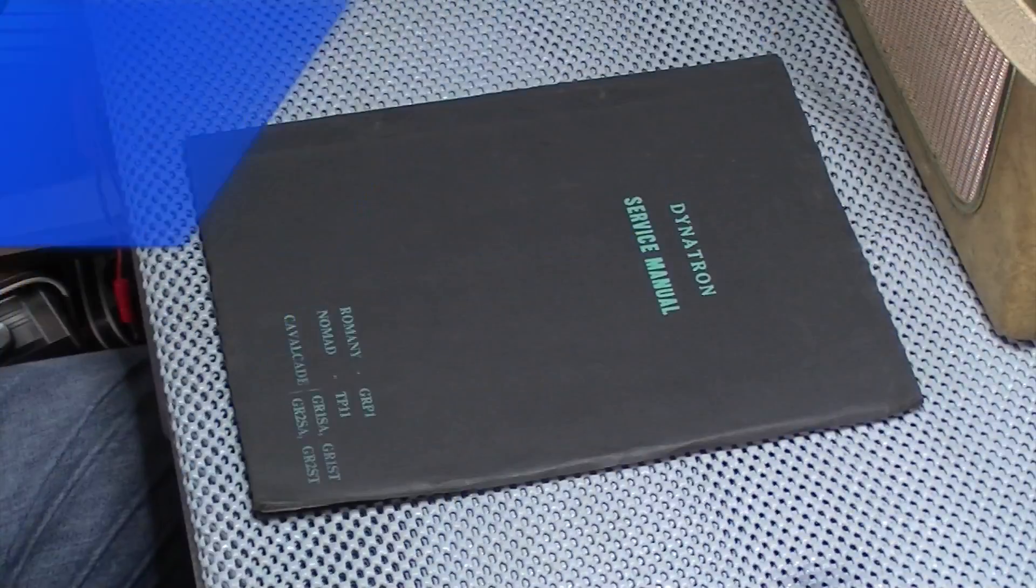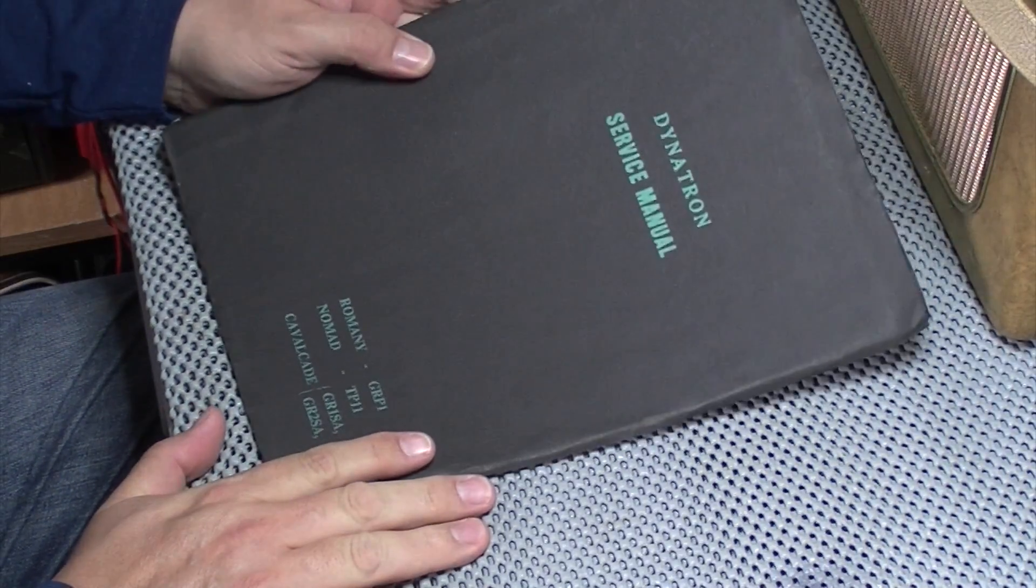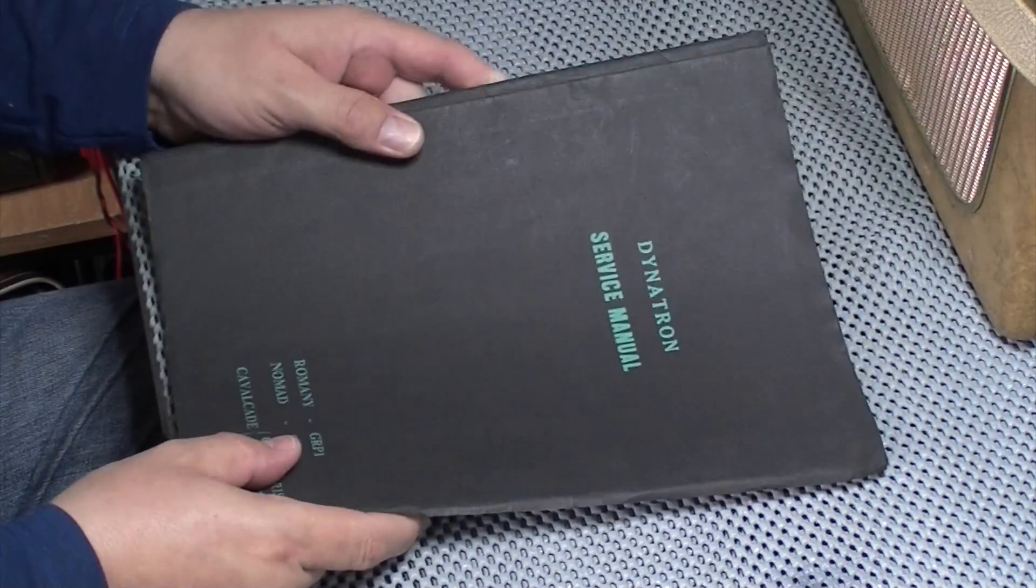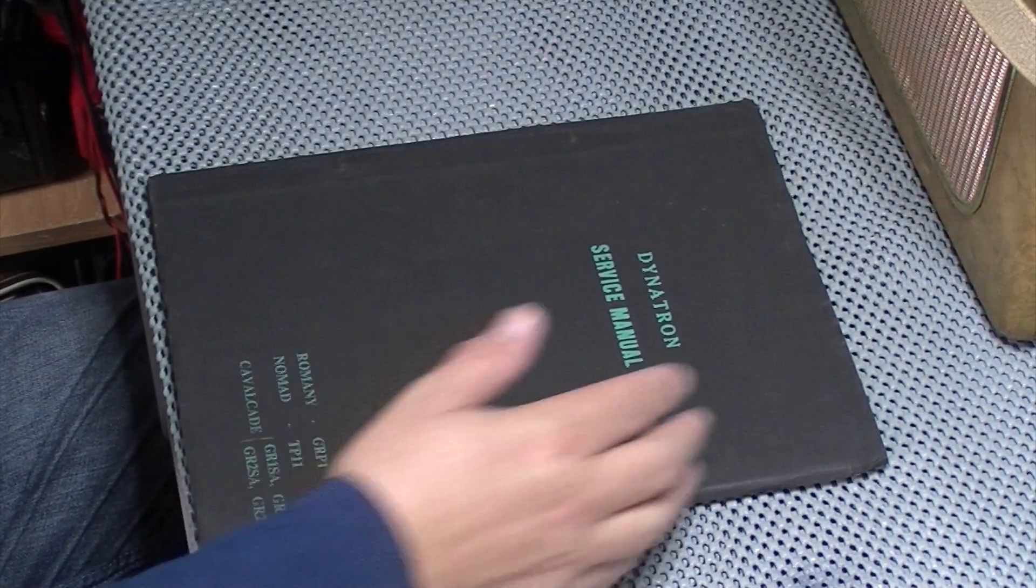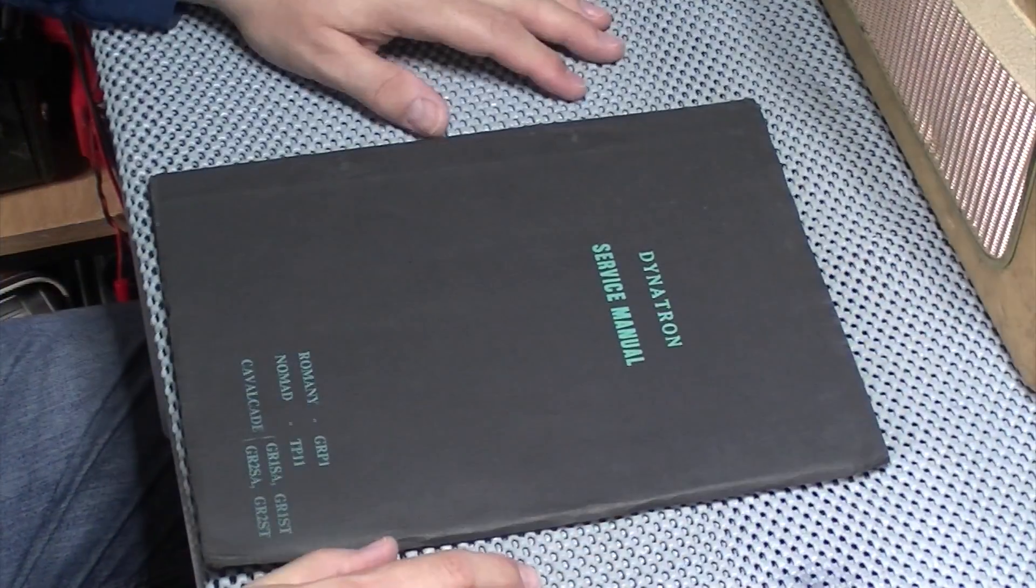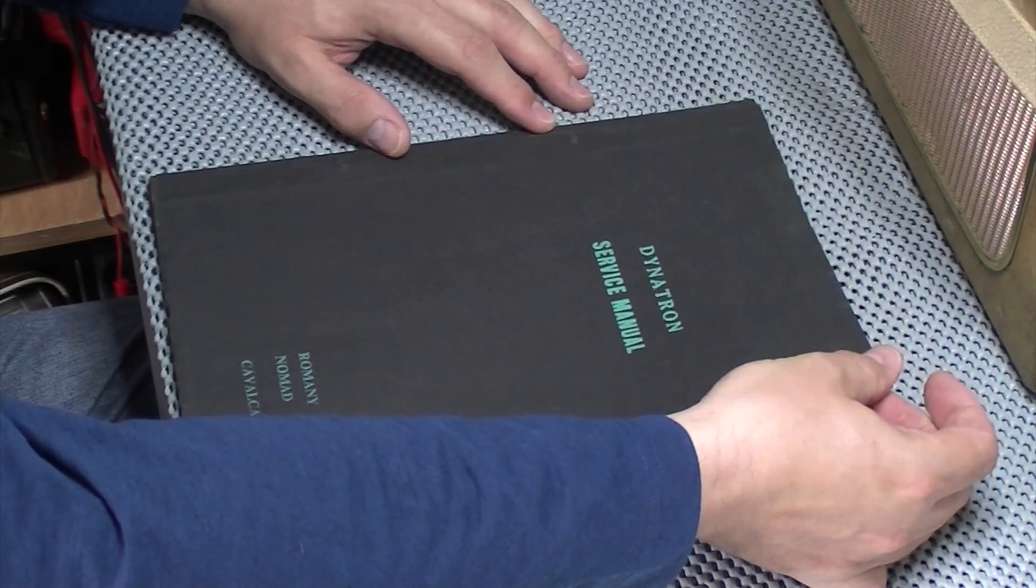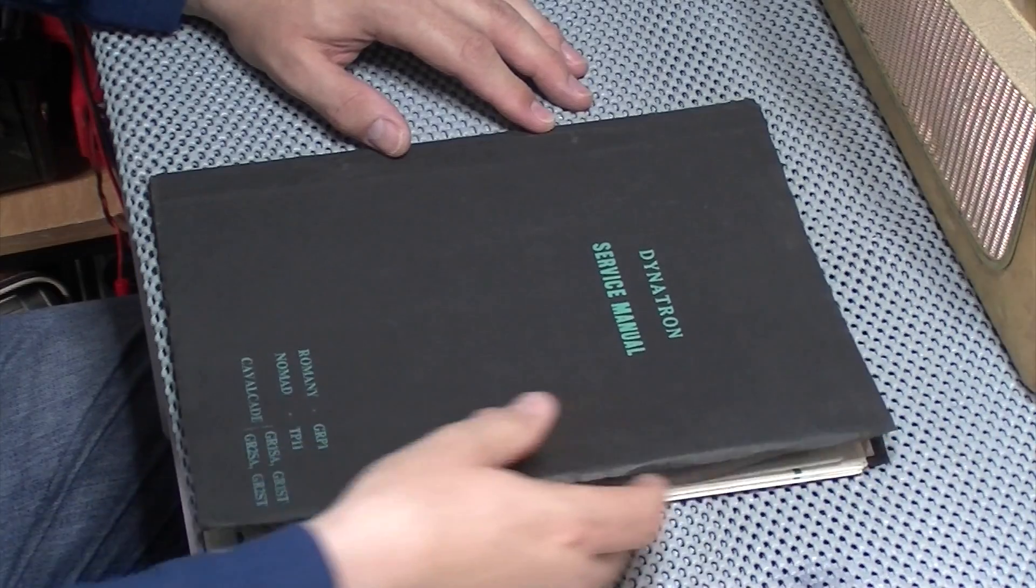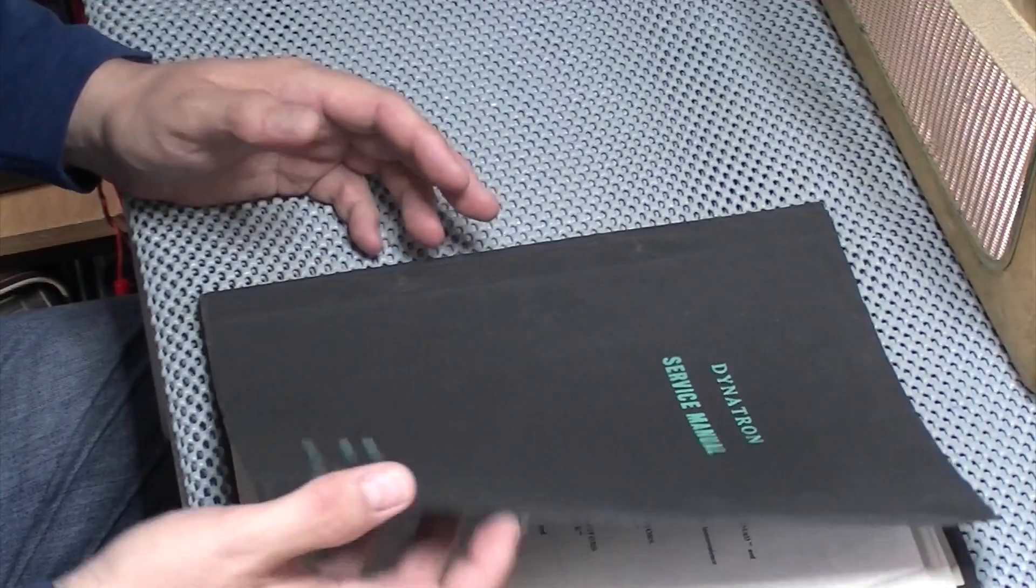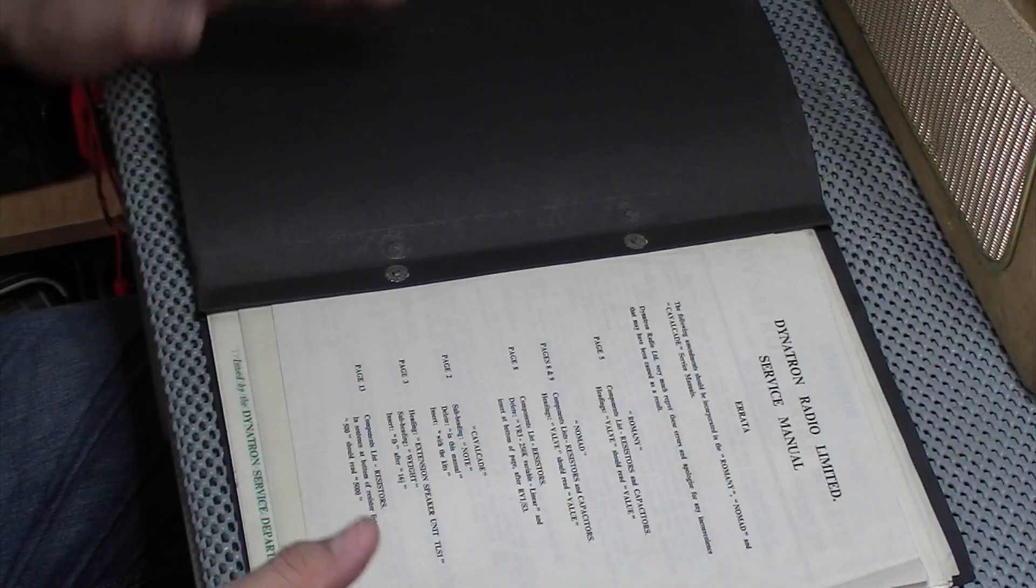So let's investigate a little bit further. Bear with me, I'm going to grab the manual for it and we'll start pulling it apart. Okay, here we have a Dynatron service manual. It covers a few models, but in the middle there it's Nomad TP11. As I say, I was lucky to get these. They were in a box of other literature, a lot of TV magazines and that which I've still got.